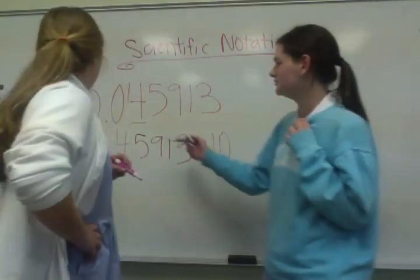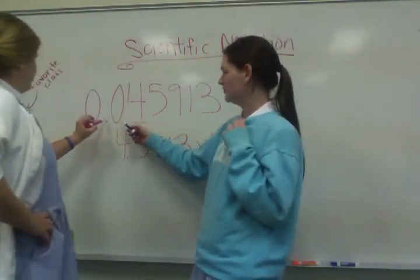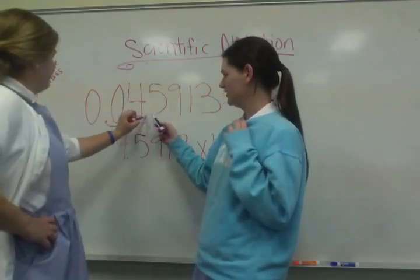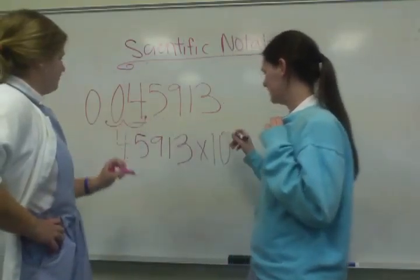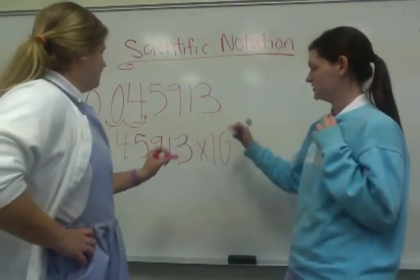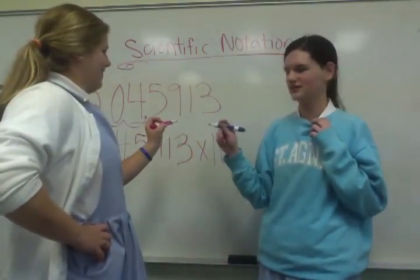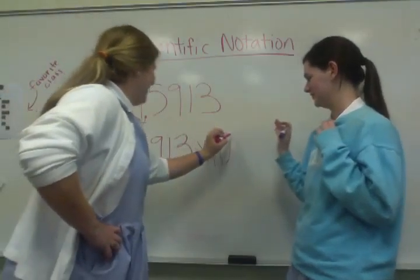And since you move the decimal two places over, it would be times ten to the negative two.